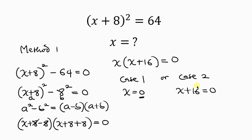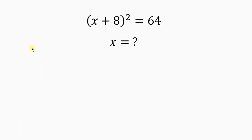For Case 2, we move 16 to the right hand side, so X = −16. We've got our two solutions: X = 0 and X = −16. Now let's look at Method 2.